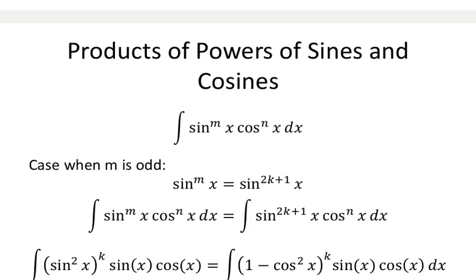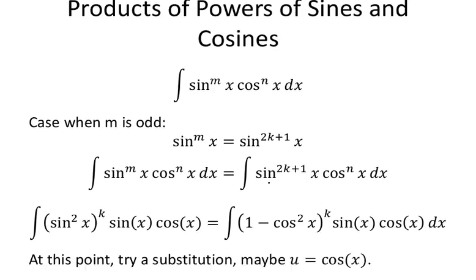Here's a case: when m is an odd number — sine to the m times cosine, where cosine can be even or odd — you can use a substitution of m equals 2k plus 1. Because for any integer k, 2k plus 1 is going to be an odd number. So you can write any odd number in that form, any odd exponent in this form.